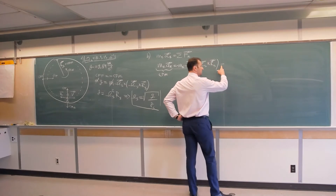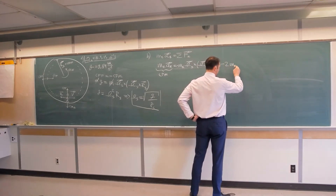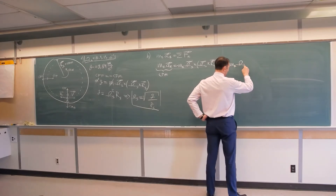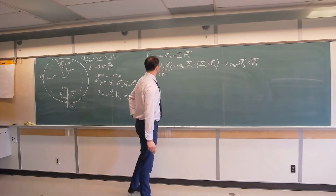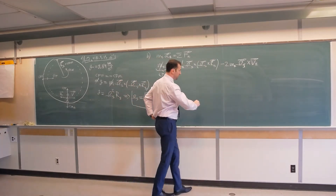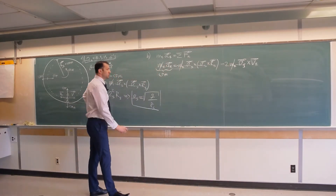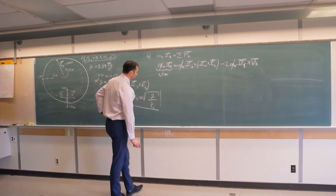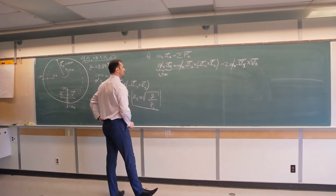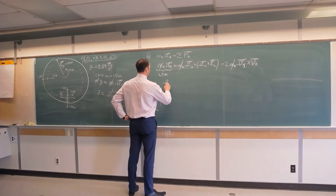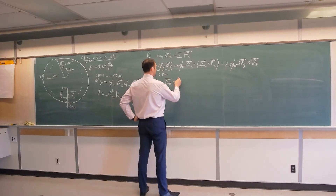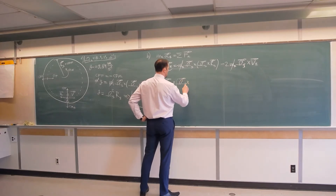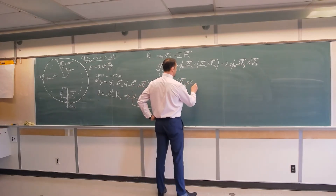The Coriolis force is negative two times mass of the ball times omega of the space station cross velocity of the ball. Notice that the mass of the ball cancels, as always in these types of problems. The centripetal acceleration will be omega of the ball cross omega of the ball cross radius of the space station.